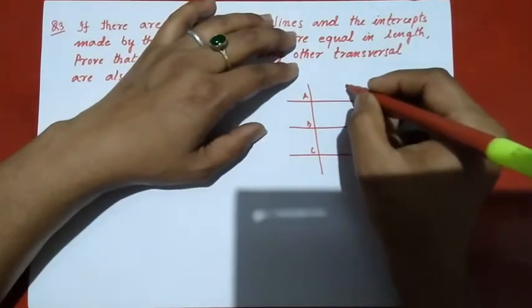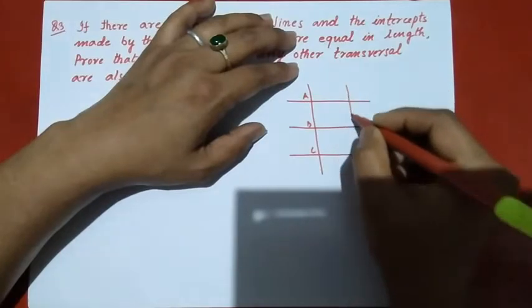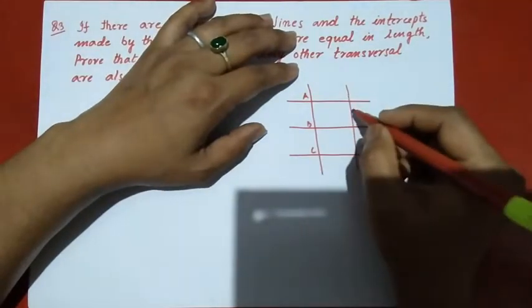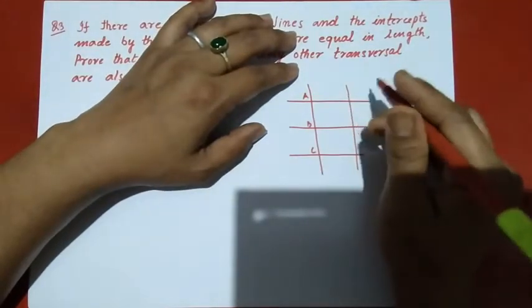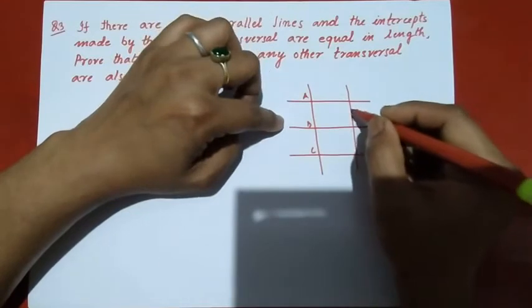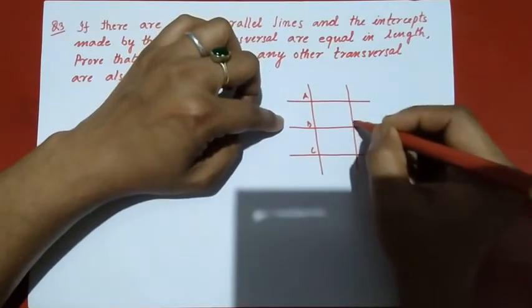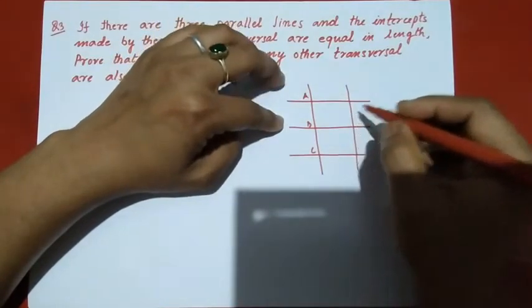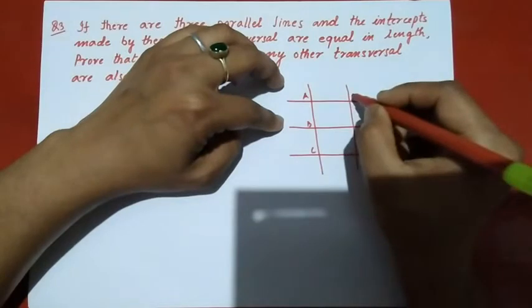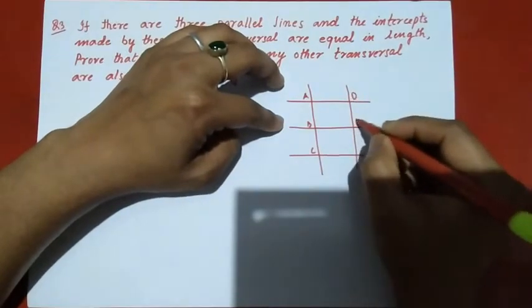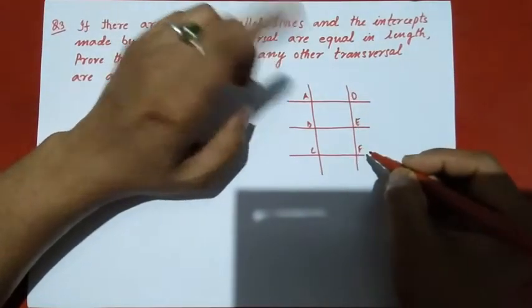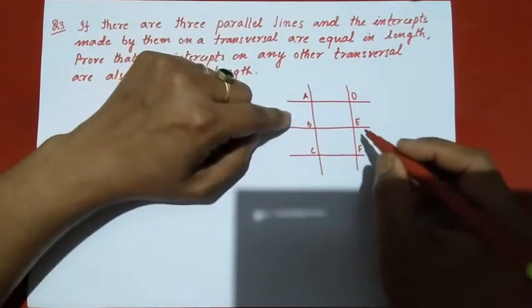The intersection points on the other transversal will be D, E, and F. We use our diagram derived from these for the lines.